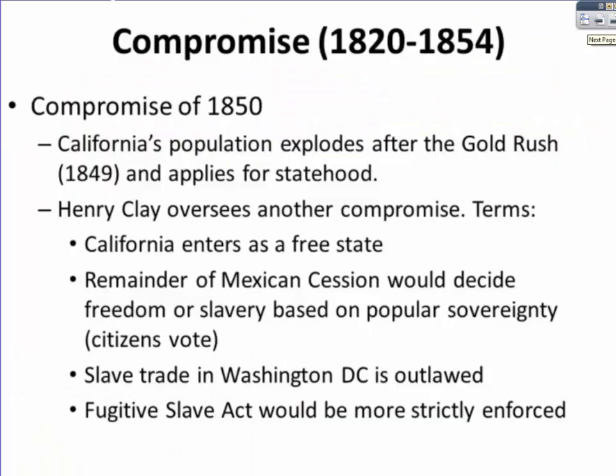However, after the Mexican War, California had a population explosion after the gold rush of 1849 and applied for statehood. Henry Clay oversaw yet another compromise. The terms were that California would enter as a free state, and the remainder of the Mexican cession would decide freedom or slavery based on popular sovereignty.